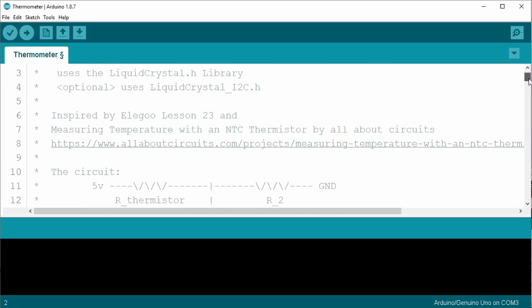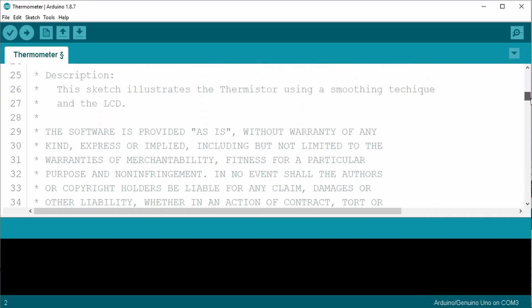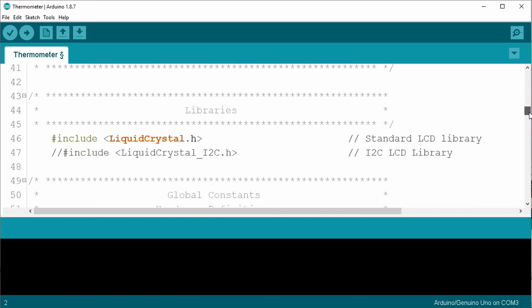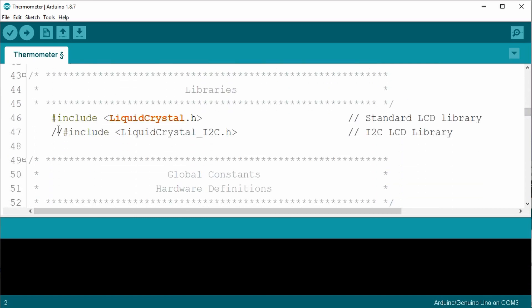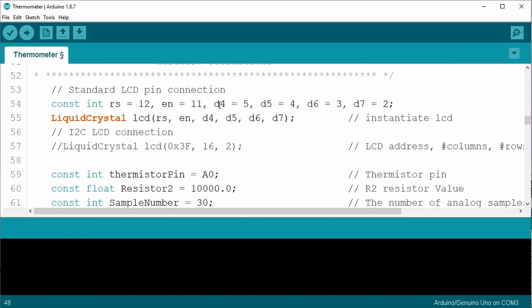This time I'm going to jump straight into the modified code. The code includes some I2C LCD support if you want to switch to the I2C LCD module adapter. Just comment out the standard lines and uncomment the I2C lines. The sketch for the LCD is almost the same as Lesson 22. There's the included liquid crystal display library, the global constants to define the LCD pins and instantiating the LCD.